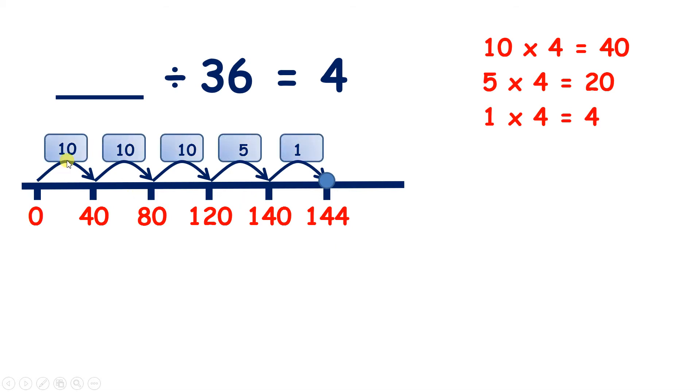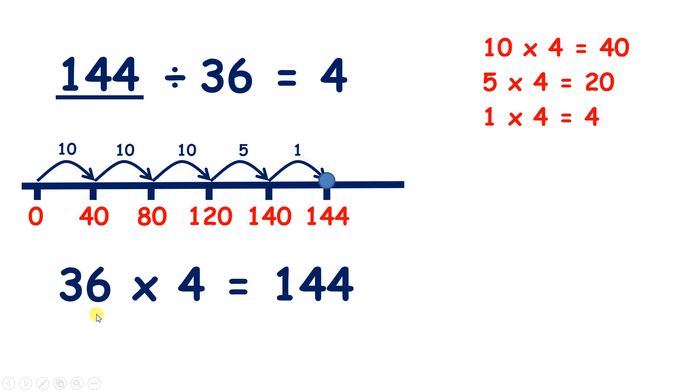So we've counted on a total of 36 fours to get 144. So 144 divided by 36 equals 4. So what we really did to answer this question is multiply 36 by 4.